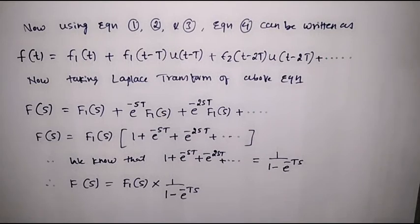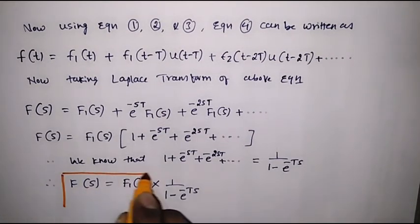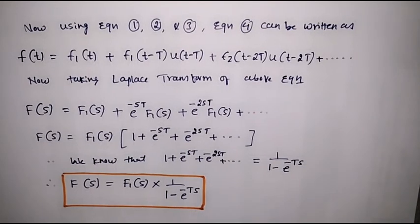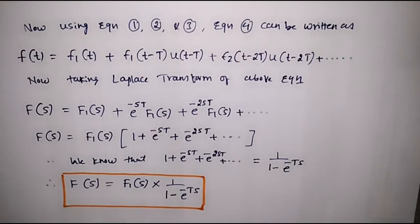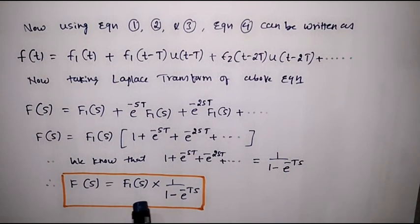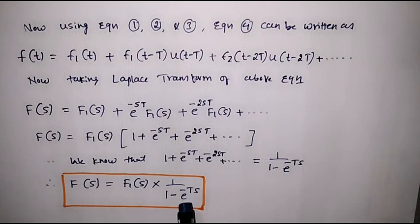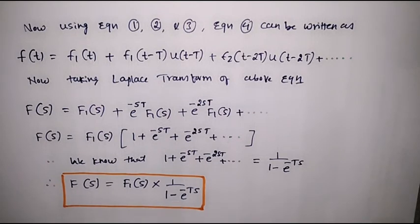This is the required solution. The conclusion is: if we need to find the Laplace transform of any periodic function, we do not need to calculate the Laplace transform of the entire periodic signal. Instead, we perform the Laplace transform of just the first cycle, represented as F1(s), and multiply it by 1/(1 − e^(−Ts)), where T is the period of the given periodic signal. This gives the Laplace transform of the entire periodic signal f(t).